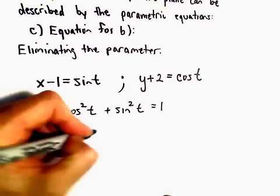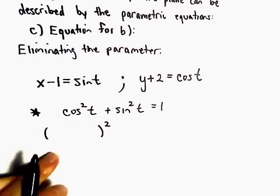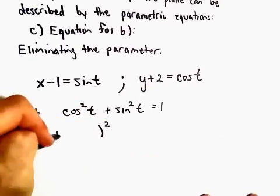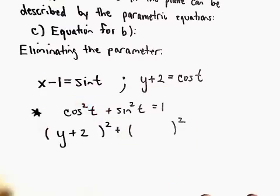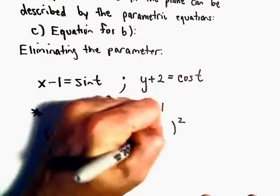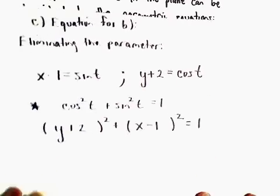Well, we can replace, so we've got cosine squared. Again, cosine is going to be y plus 2 quantity squared. We've got sine squared, which is x minus 1. That equals positive 1.